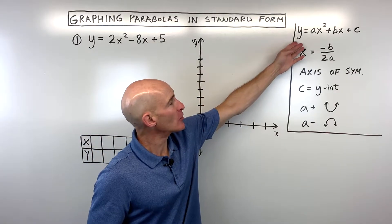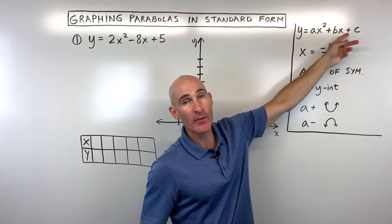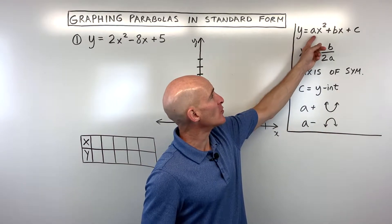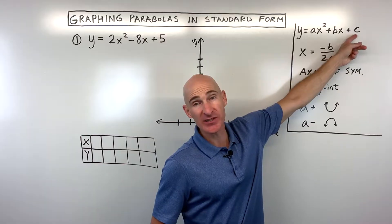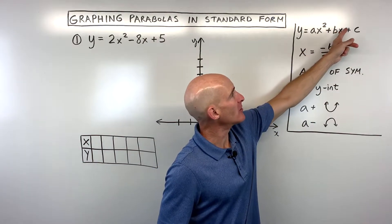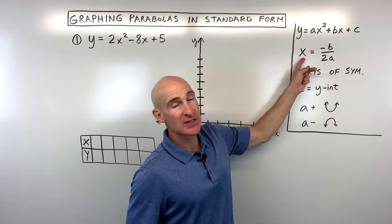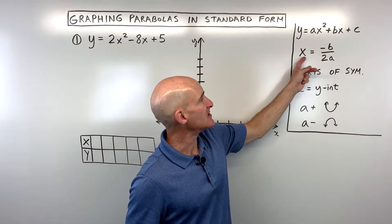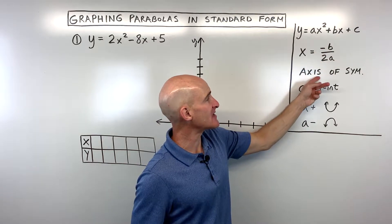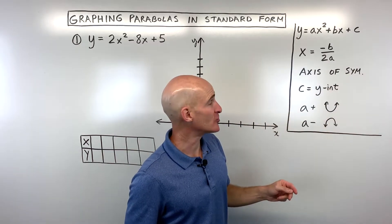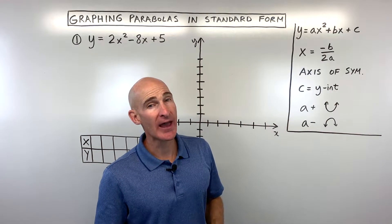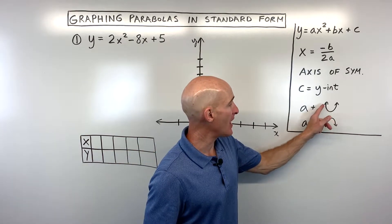When we talk about quadratic functions in standard form and graphing the parabola shape it forms, the standard form is y equals ax squared plus bx plus c. Notice that it's in descending order from the highest power down to the constant. We use the formula x equals the opposite of b divided by 2a, which gives us the axis of symmetry — the line that divides the parabola in half. It's also the x-coordinate of the vertex, which is the point where the graph bends.